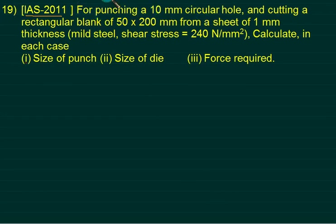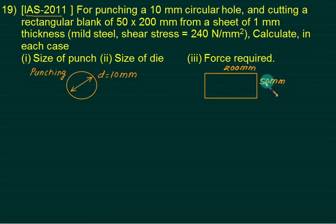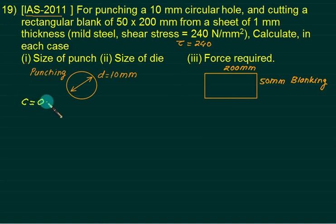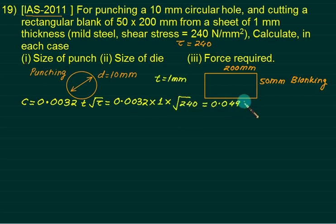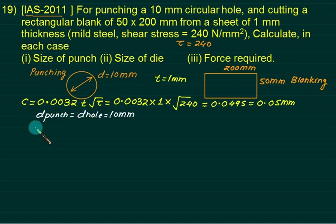Example: Punching a 10 mm circular hole and blanking a rectangular blank from the same plate. For punching: F1 = π×10×1×240 = 7.54 kN. For blanking (200×50 mm blank): F2 = 2×(200+50)×1×240 = 120 kN. Clearance c = 0.0032 × t × √τ ≈ 0.05 mm radial clearance.